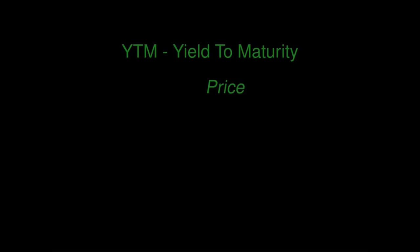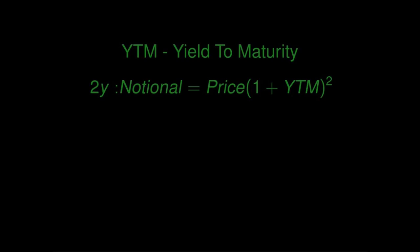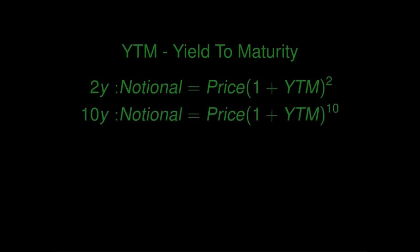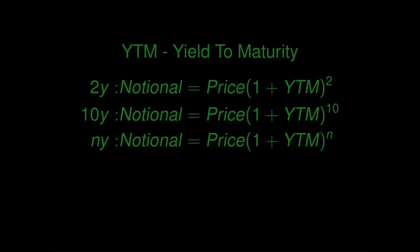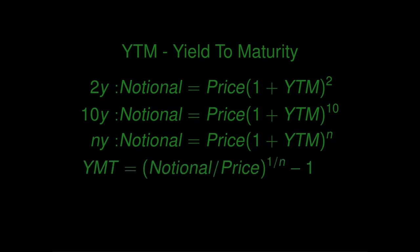We invest an amount equal to the bond price. After 1 year, we have price times (1 + yield), and invest it again at the same rate. For a 2-year bond, this amount will be equal to the notional in 2 years, and for a 10-year bond, the same will be true in 10 years. In general, the notional equals price times (1 + yield to maturity) to the power of years to maturity. We can use this relation to solve for yield to maturity: yield equals the nth root of (notional divided by price), minus 1.